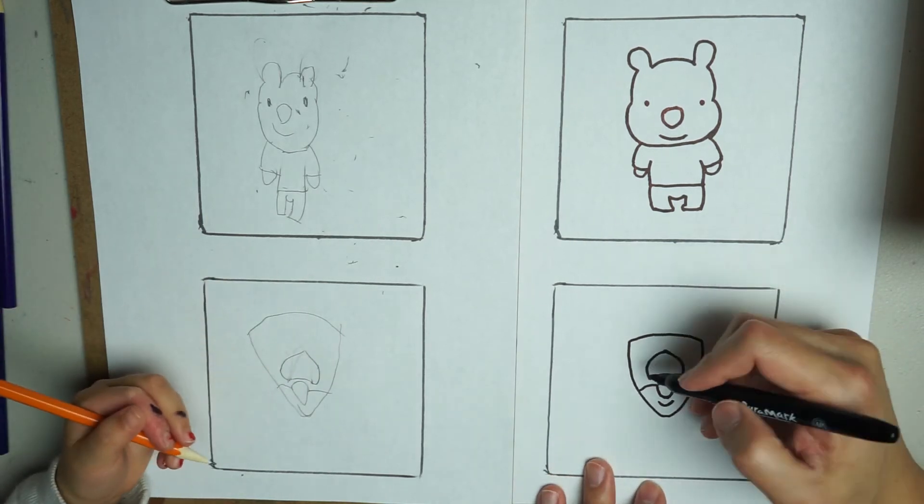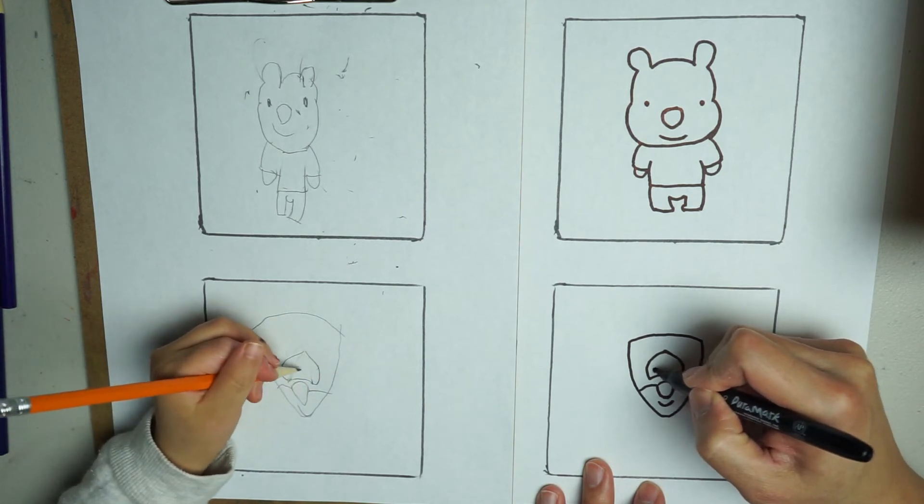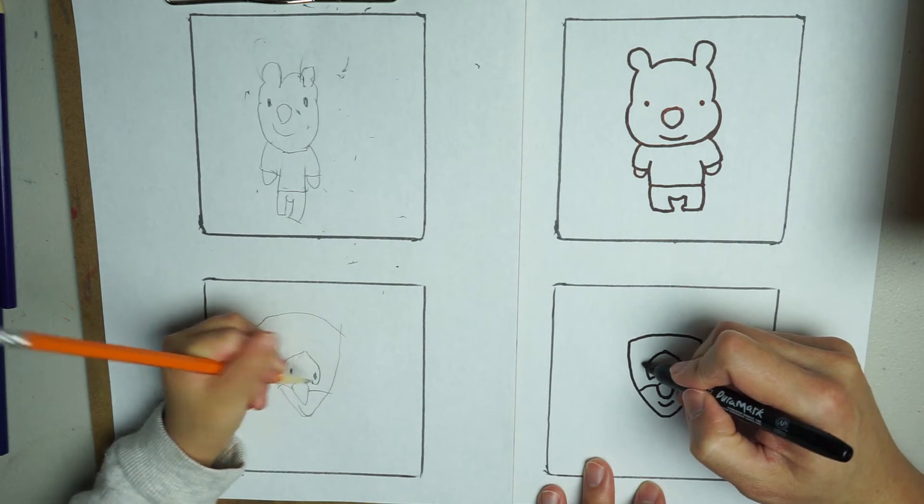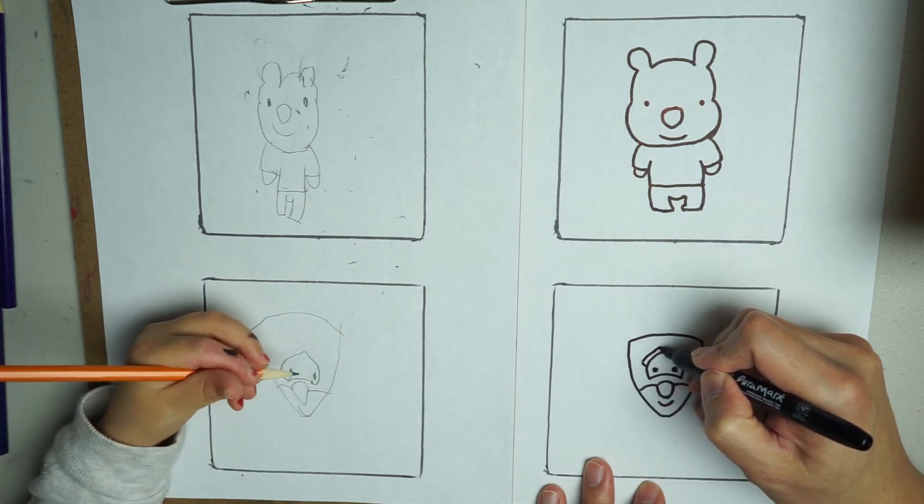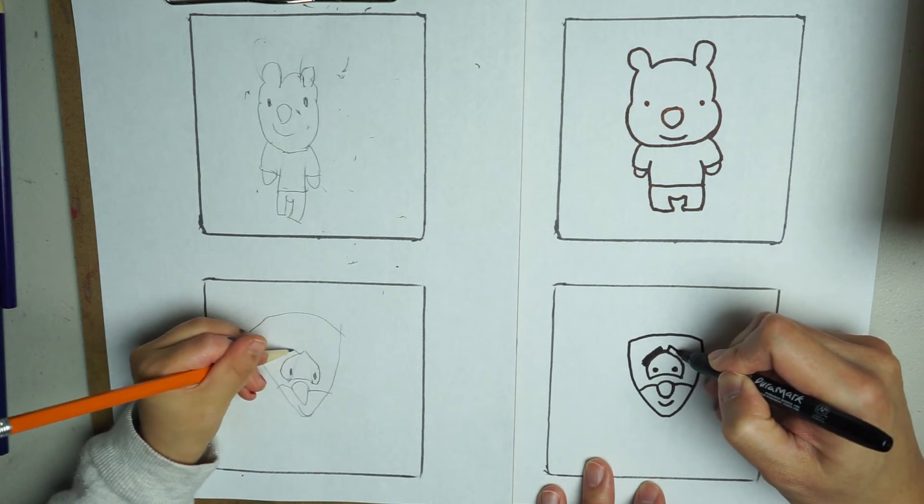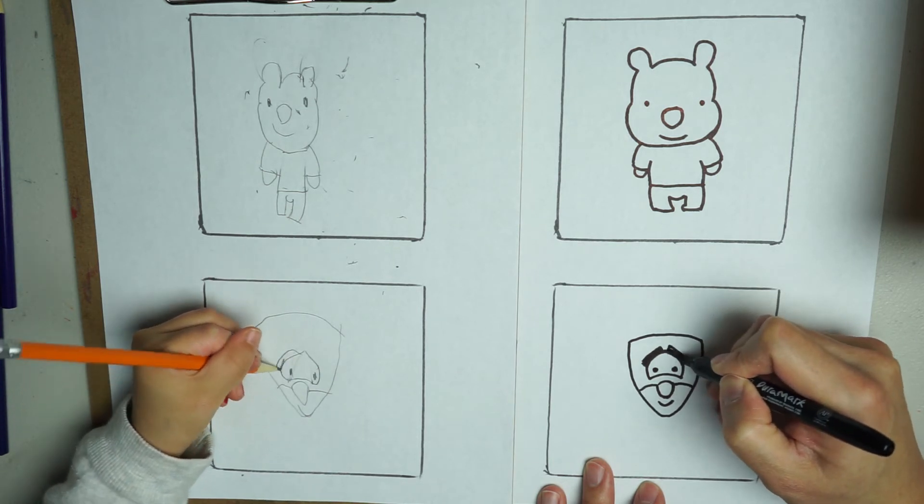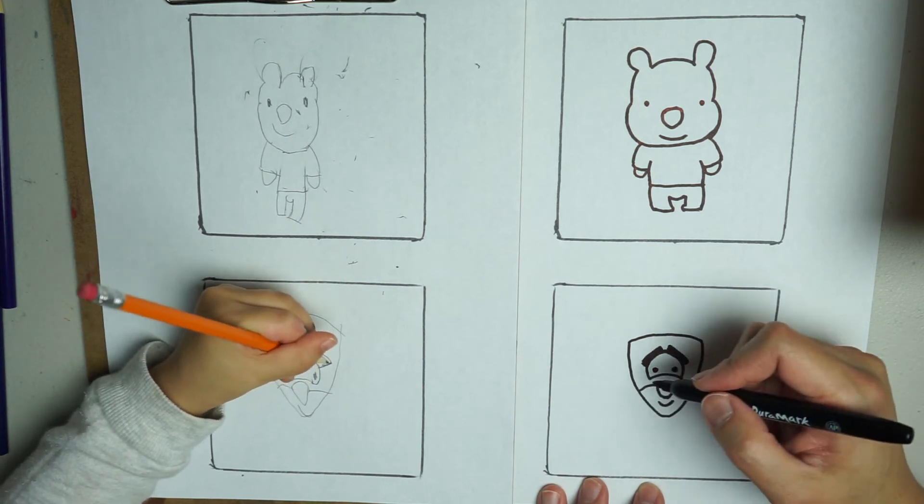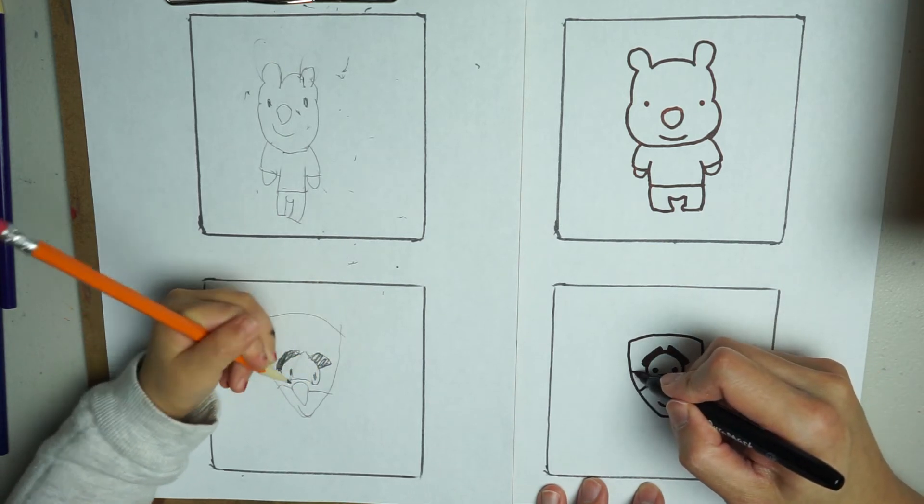Now we are going to draw his eyes. He has two small eyes in the middle down here. And big eyebrows. Big rectangular eyebrows. He has two triangles on the side of his face. Part of his stripes.